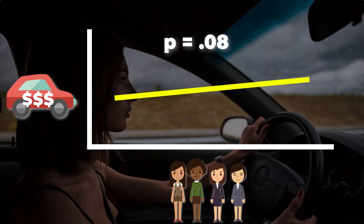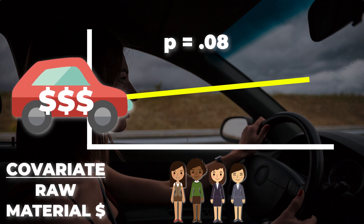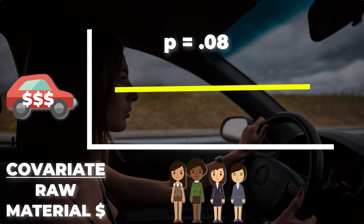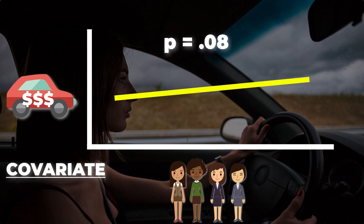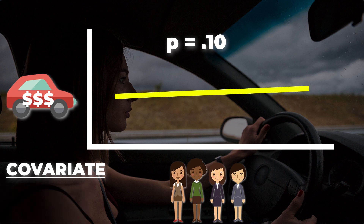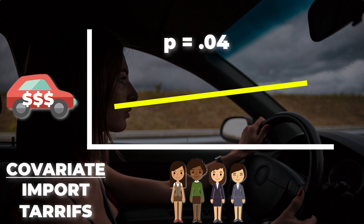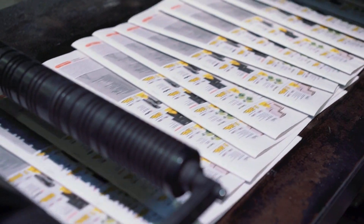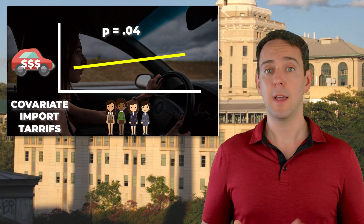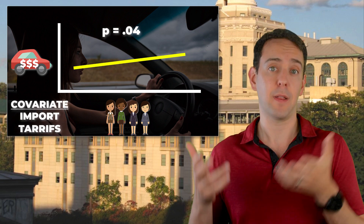The economist first includes changing raw material prices in their statistical model. When they do that, the strength of the relationship between new car prices and the percentage of women in the workforce really doesn't change much — the p-value remains around 0.08. So they get rid of that variable, arguing it doesn't really matter for their model. They then add income levels instead. Now the key p-value actually goes up to 0.10, suggesting a weaker relationship between the two key variables. So they again drop this one and move on to variation in import tariffs. All of a sudden, the economist can celebrate, because the key p-value just dropped to 0.04 — just below the critical cutoff of 0.05 — suggesting a statistically significant relationship. The economist is elated and goes on to publish their paper, arguing that their theory about the relationship between new car prices and the percentage of women in the workforce is even robust to fluctuations in import tariffs.